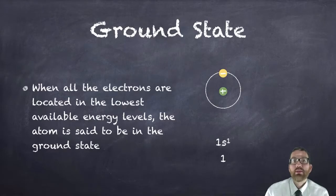Let's talk about the difference between ground state and excited state. When all the electrons are located in the lowest available energy levels, the atom is said to be in the ground state.